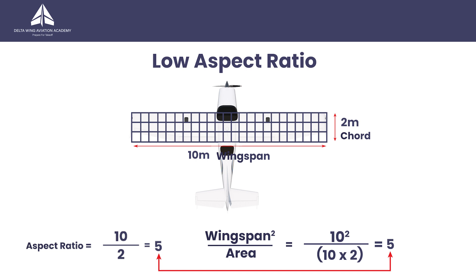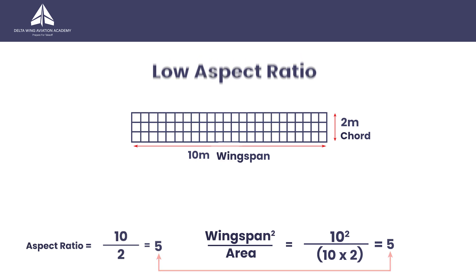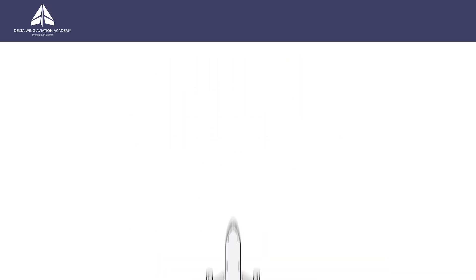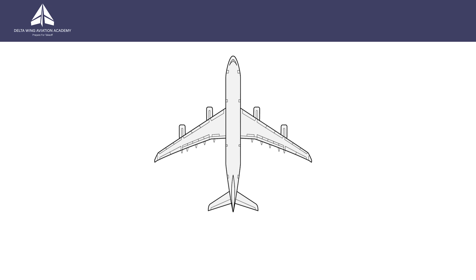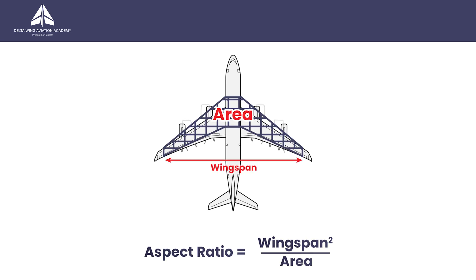Please note that the wing area in this formula is not the upper and lower surface area of the wing. The value for the wing area is the area of its shape as viewed from above. This version of the formula is particularly useful when calculating the aspect ratio of a wing that is not rectangular, such as this swept back airliner wing.